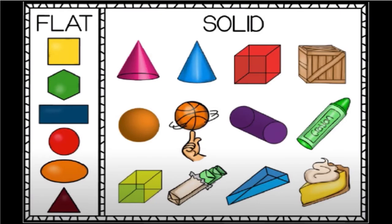Hi, first grade. Today we're going to compare and be able to describe the difference between flat and solid shapes. Flat shapes that you see here just have one flat side to them, while solid shapes or three-dimensional shapes have many different faces. Let's get started comparing.